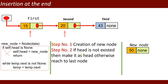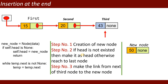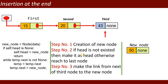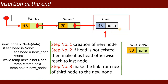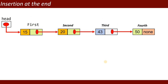The while loop: while temp.next is not None, temp = temp.next. This traverses until we reach the last node, whose next is None. Step three: make the link from the last node to the new node — temp.next = new_node. Suppose new_node holds value 50; in this way you insert a new item at the end of the existing list, and the final list is updated accordingly.